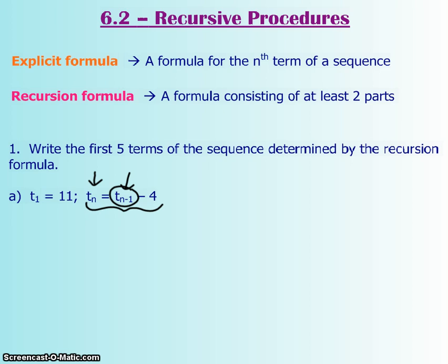So you're not only involving your current term value, but you're also involving the previous term value. Let me show you how it works. They've told us that the first term is 11, and they want you to find the first five terms.